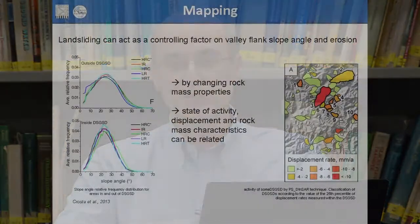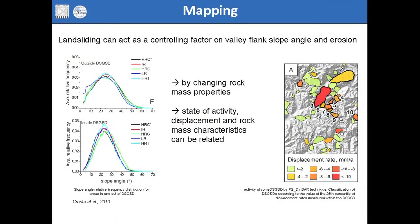Once you have this dataset, you can work out relationships between morphometrical parameters and landslide distribution. The slope distribution for cells within and outside deep-seated deformations shows that the mean and modal values shift toward lower slope angles inside the landslide. This is interesting because we are transferring mass, eroding material from the slope and bringing it into the valley, usually due to changes in rock mass properties. A reclassification of deep-seated landslides based on state of activity can also be derived from PS InSAR sensor data.